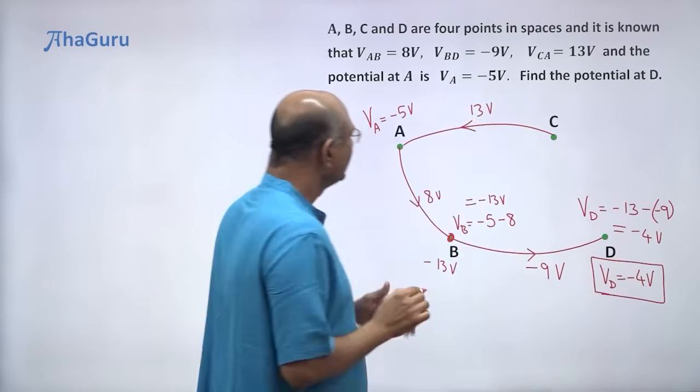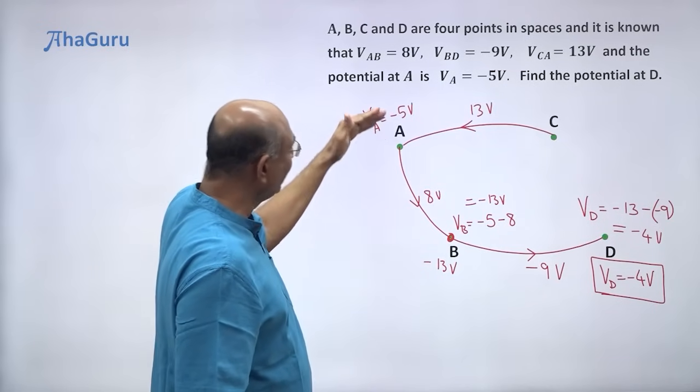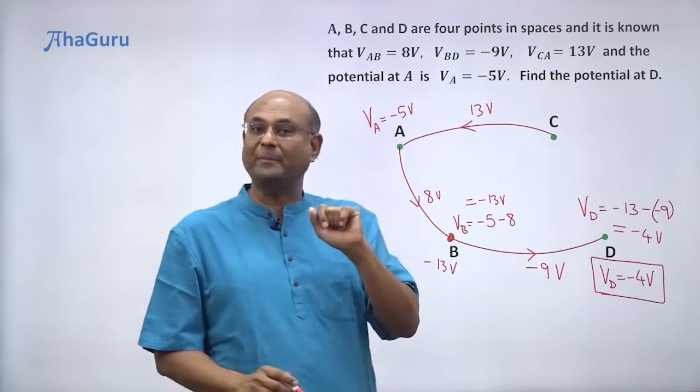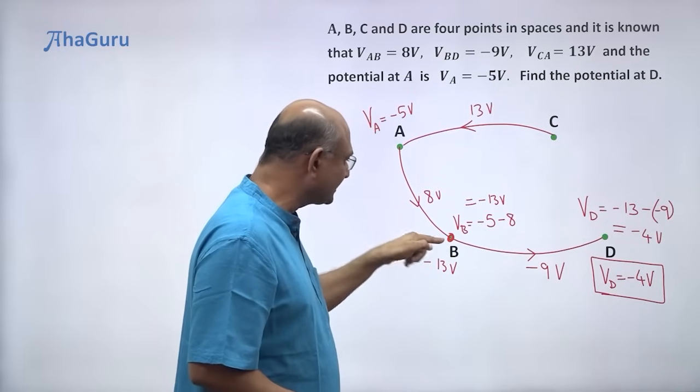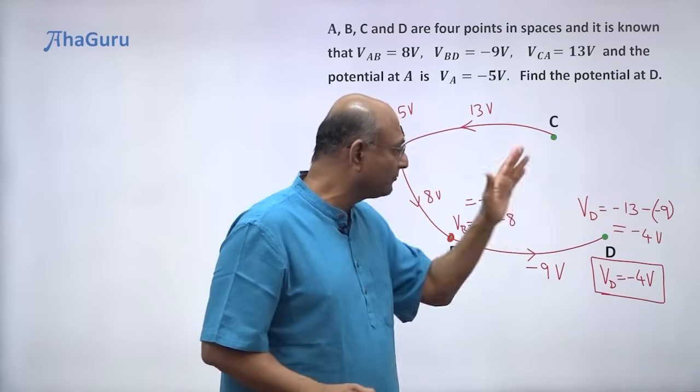Is that clear? So by using this idea that potential at A minus the potential drop gives you potential at B, that helps us quickly go from A to B, find the potential here, then from B to D, find the potential at D.